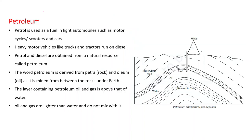Petroleum. Petrol is used as a fuel in light automobiles such as motorcycles, scooters, and cars. Heavy motor vehicles like trucks and tractors run on diesel. Petrol and diesel are obtained from a natural resource called petroleum. Students, don't be confused about petroleum and petrol — petrol is one of the products obtained from petroleum.